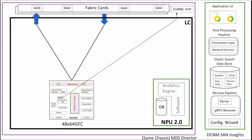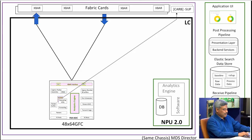Essentially everything on the line card is now in one chip. The goal was non-blocking, full line rate, analytics engine inside, all ports, plus the crossbar interface and arbiter — all integrated. We'd love to get inside the analytics engine and see how it works on 64 Gig.